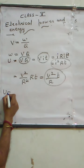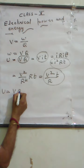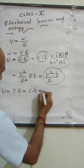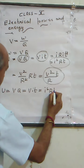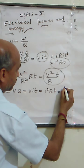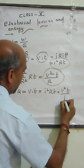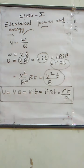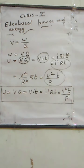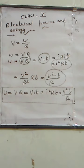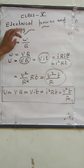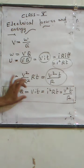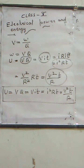So energy has four formulas: the first is VQ, the second is VIt, the third is I²Rt, and the fourth is V²t upon R. This is how we express energy in mathematical form. Electrical energy is nothing but the electrical work stored in the conductor in the form of energy.